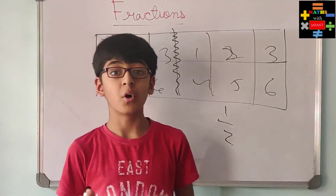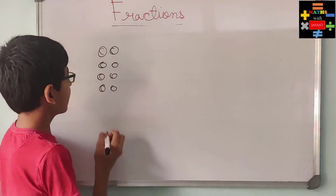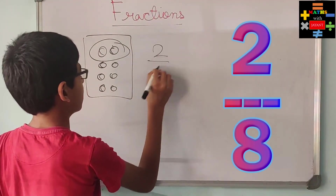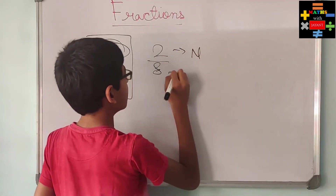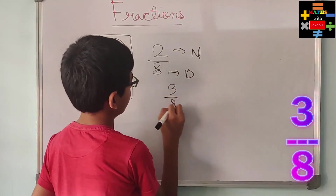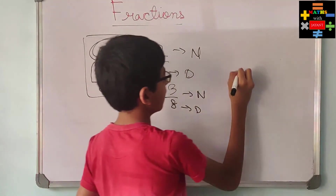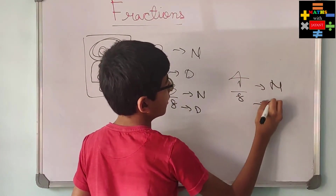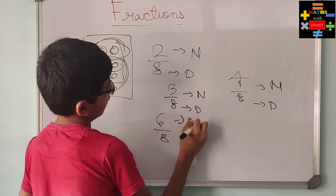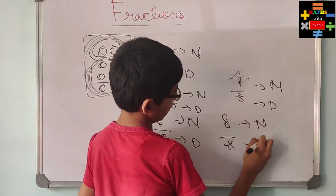So remember that the parts have got to be equal. Now suppose you have some balls. Two balls out of eight balls — two is the numerator and eight is the denominator. Three balls out of eight — three is the numerator and eight is the denominator. Four balls out of eight, or four by eight — four is the numerator, eight is the denominator. Six balls out of eight — six is the numerator, eight is the denominator. And the whole thing: eight balls out of eight — eight is the numerator and eight is the denominator, so the fraction is eight by eight.